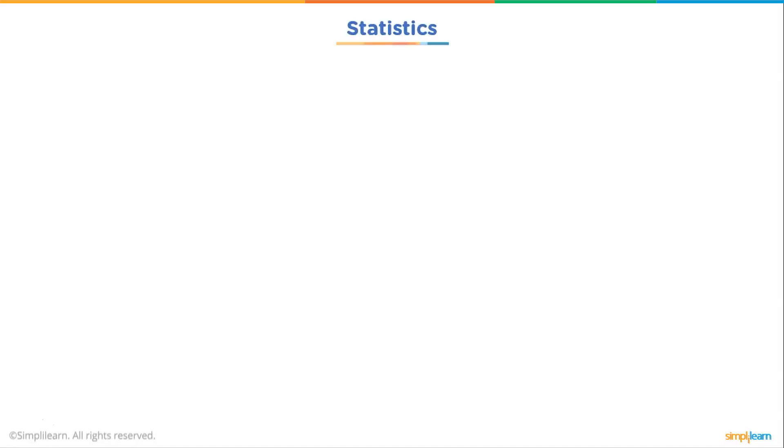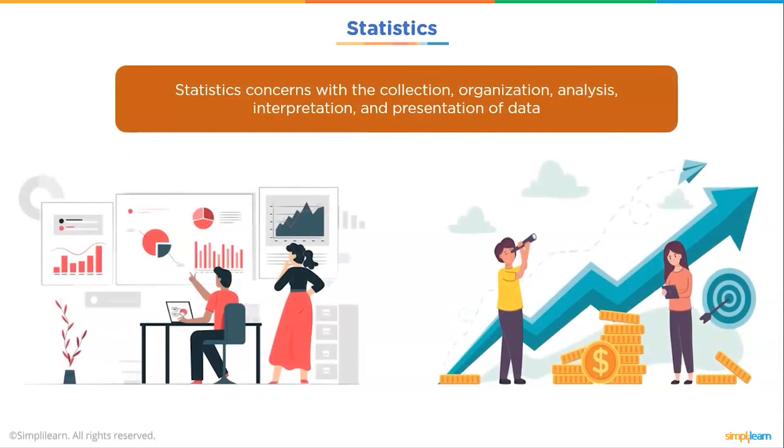So what is statistics? Statistics is a science concerned with developing and studying methods for collecting, analyzing, and interpreting empirical data. Statistics is a highly interdisciplinary field. Research and statistics find applicability in virtually all scientific fields and research questions in the various scientific fields. In developing methods and studying the theory that underlies the methods, statisticians draw on a variety of mathematical and computational tools.